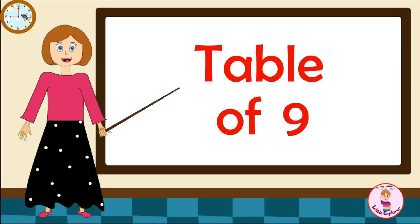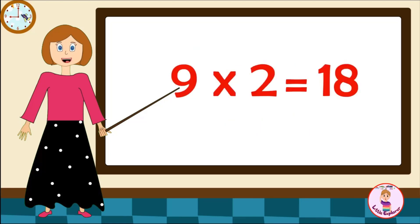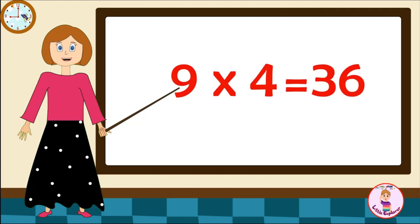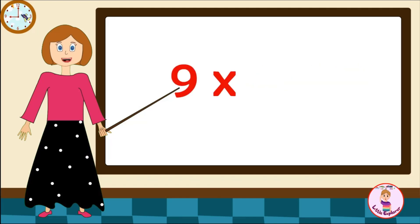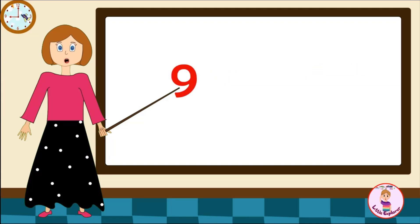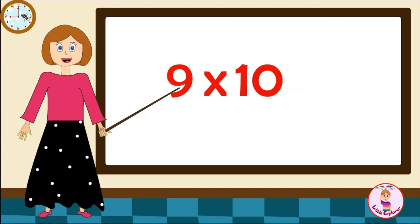Table of Nine. Nine-one's are nine. Nine-two's are eighteen. Nine-three's are twenty-seven. Nine-four's are thirty-six. Nine-five's are forty-five. Nine-six's are fifty-four. Nine-seven's are sixty-three. Nine-eight's are seventy-two. Nine-nine's are eighty-one. Nine-ten's are ninety.